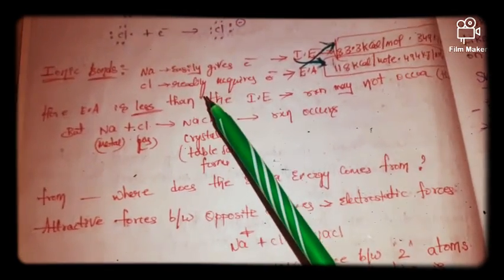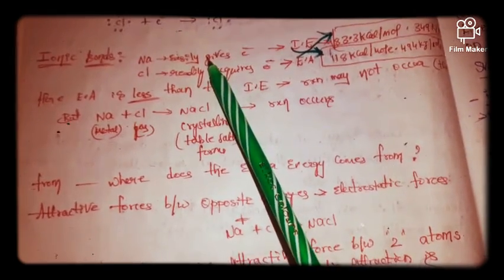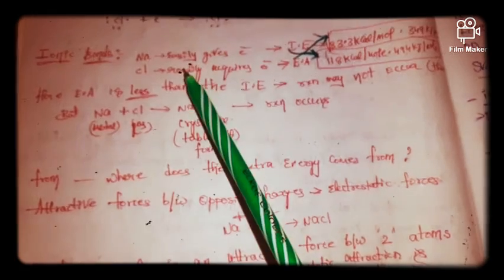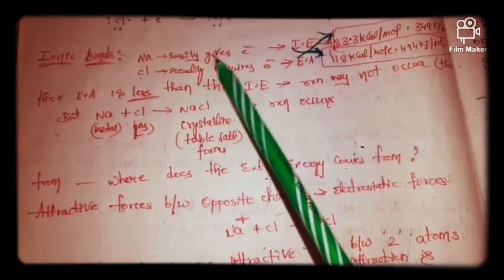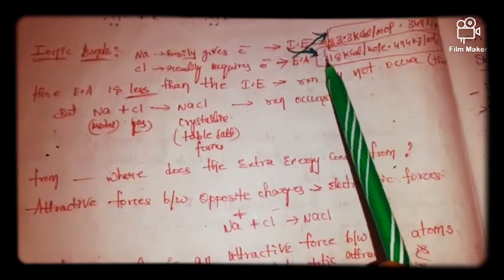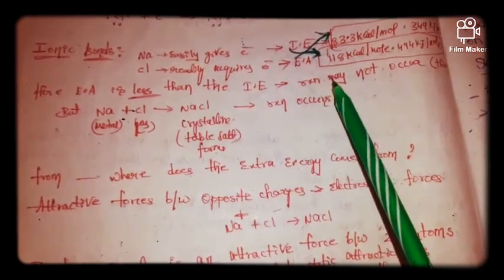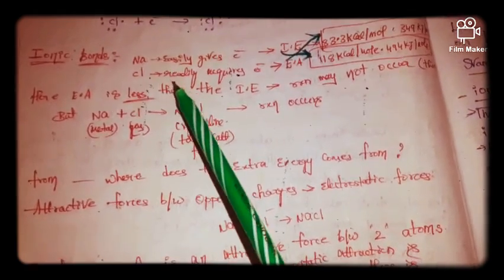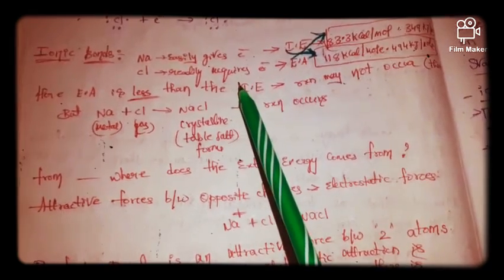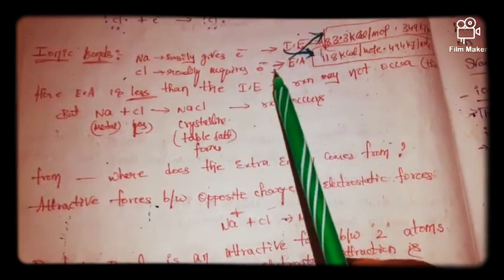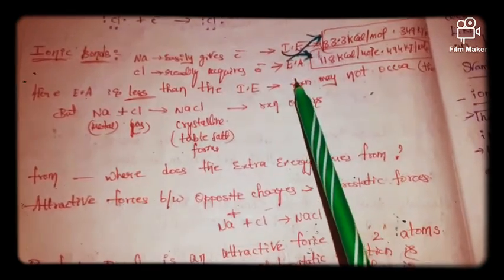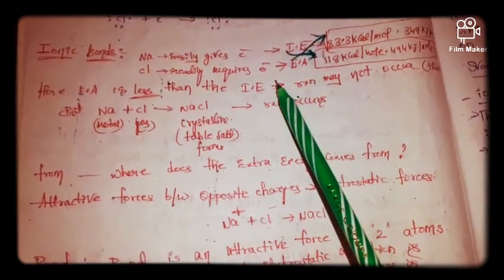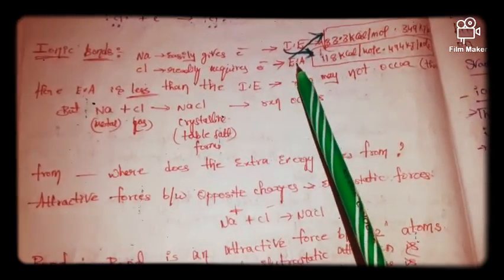One important thing: since an electron is coming out from sodium, the energy required to remove an electron from an atom is called ionization energy. The ionization energy for sodium is 118 kilocalories per mole. Since chlorine readily accepts electrons, the energy released when an electron is added to an atom is called electron affinity, also known as electron gain enthalpy. The electron affinity for chlorine is 83.3 kilocalories per mole.